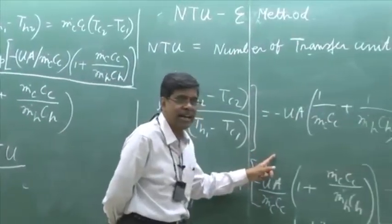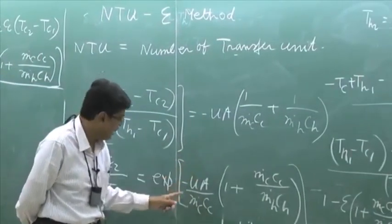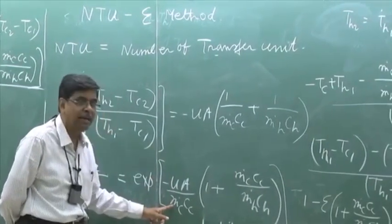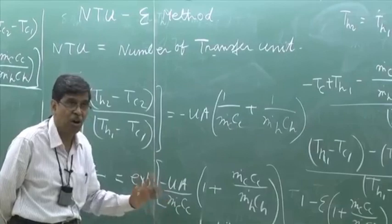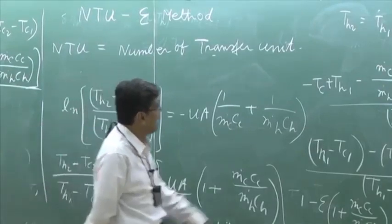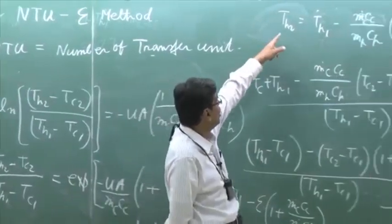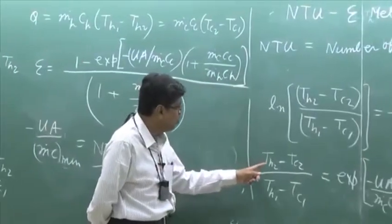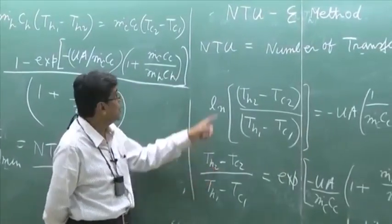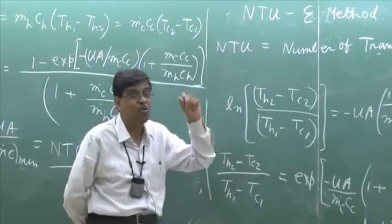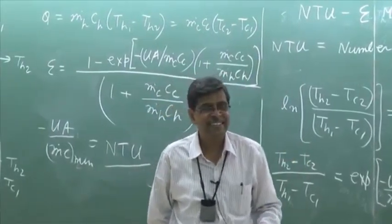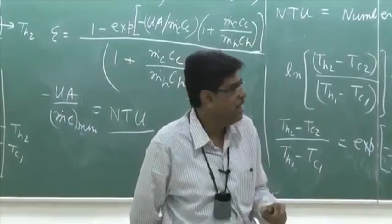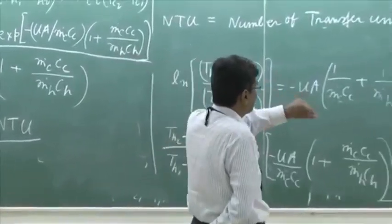I will start again. I started with cold fluid as the minimum fluid; for hot fluid as the minimum fluid, I will take M dot h c h. Secondly, I will not take T h2 — that is the second catch. T h2 will not be substituted from this equation; T c2 will be substituted.